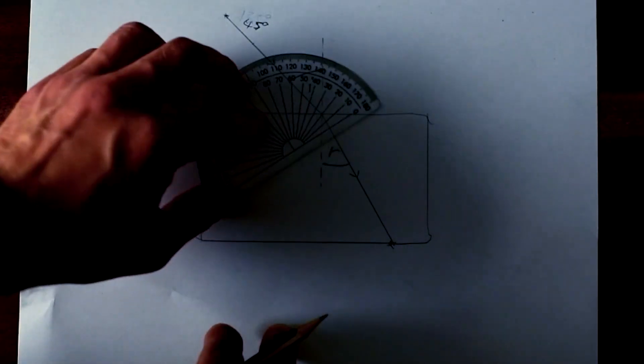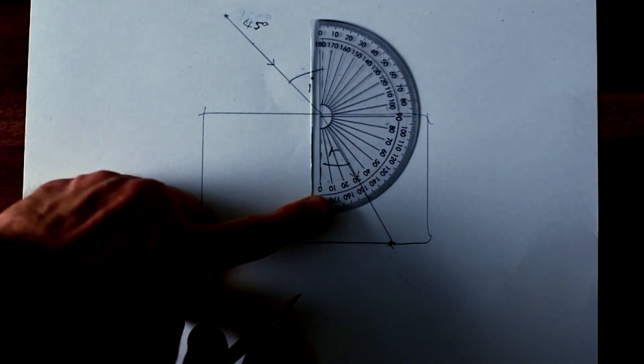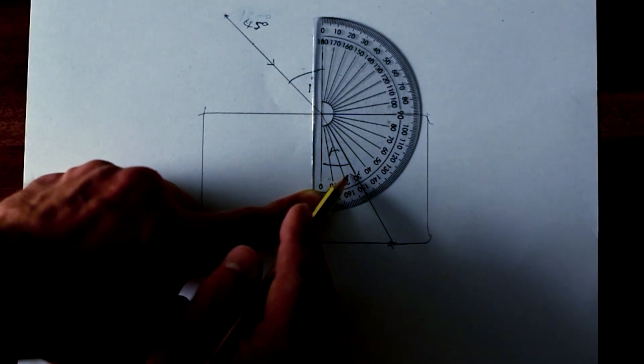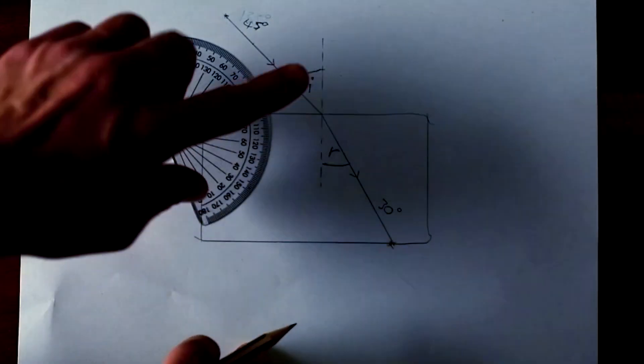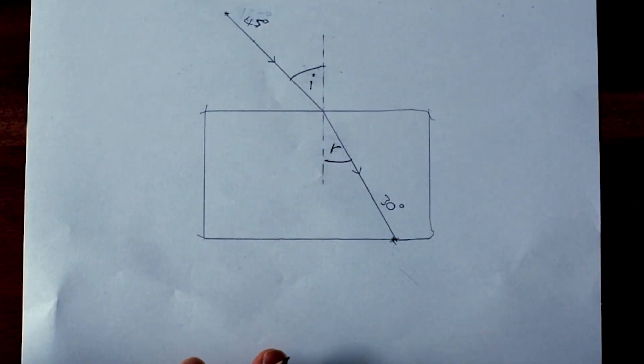Now we want to see what angle of refraction that is. So nicely lined up again with the normal. My angle of refraction is, well it's not 150, it's 30 degrees. So there we go, I have an angle of incidence and I have an angle of refraction.